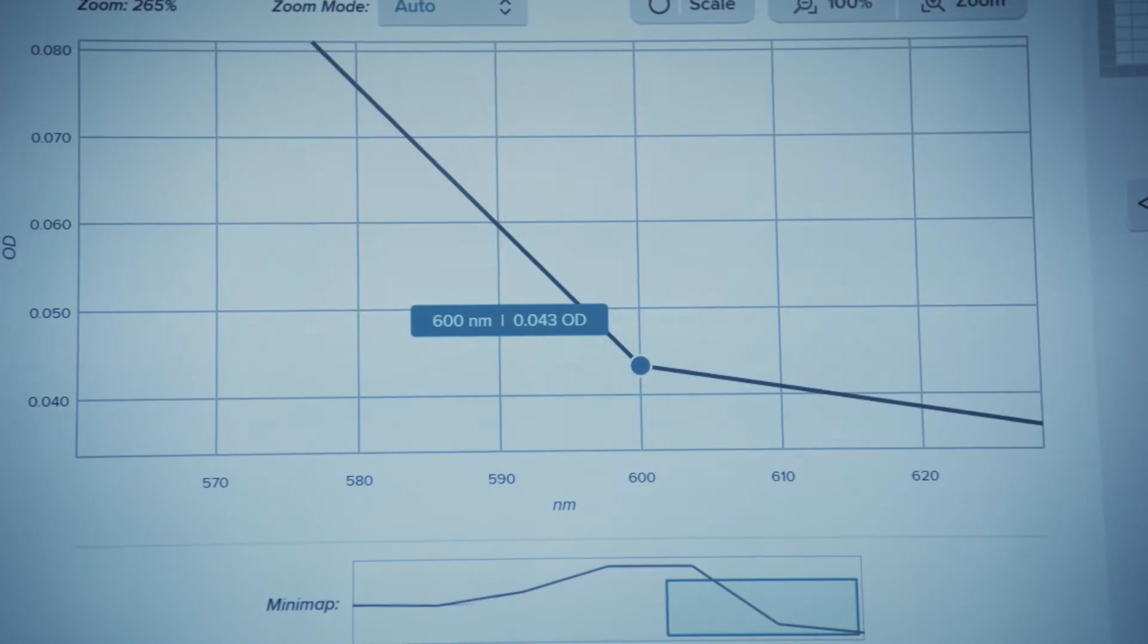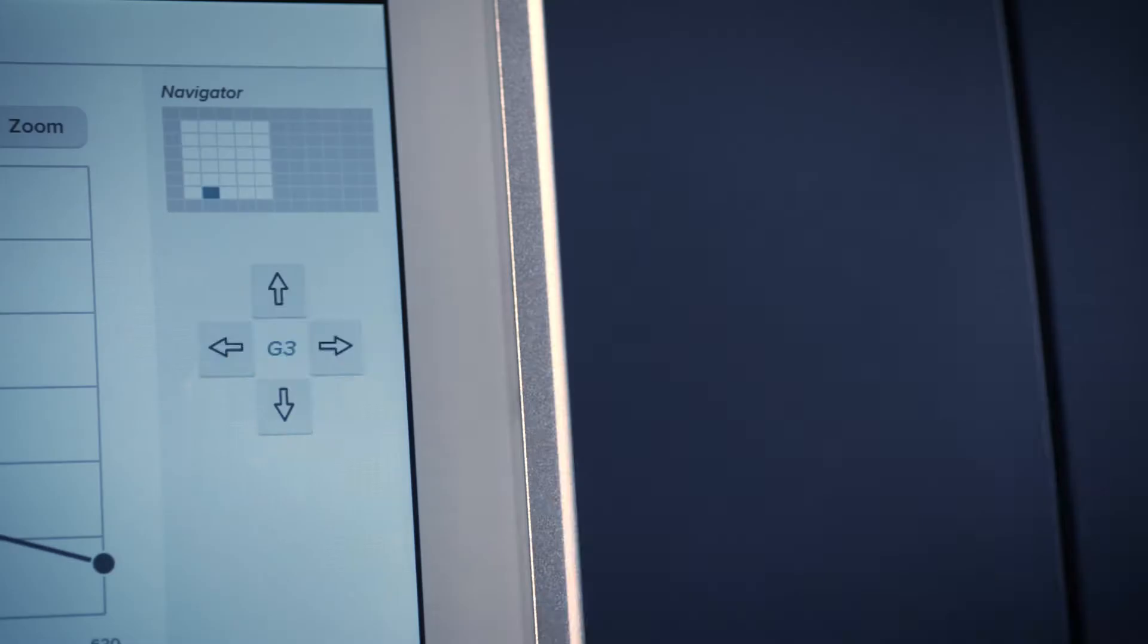Touching a graph point will display the numerical values plotted. Use the arrows to the right of the graph to navigate between wells.